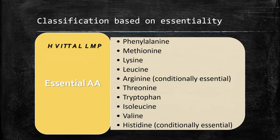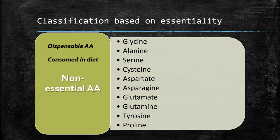Essential amino acids are remembered with the mnemonic HVITALMKP — H is histidine, V is valine, I is isoleucine, T is tryptophan, A is threonine, L is arginine, M is leucine, K is lysine, P is methionine and phenylalanine. Out of the 10 listed, two amino acids — arginine and histidine — can be partly synthesized by adult humans. Hence these are considered semi-essential or conditionally essential amino acids. So 8 are essential, 2 are semi-essential, and the remaining 10 are non-essential amino acids which the body can synthesize to meet biological needs and need not be consumed in the diet.